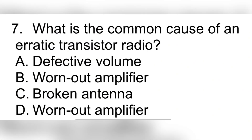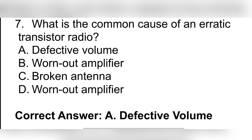Question 7. What is the common cause of an erratic transistor radio? A. Defective volume. B. Worn-out amplifier. C. Broken antenna. D. Worn-out amplifier. Correct answer: A. Defective volume.